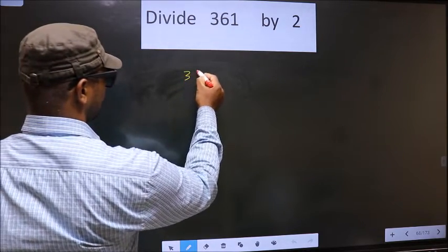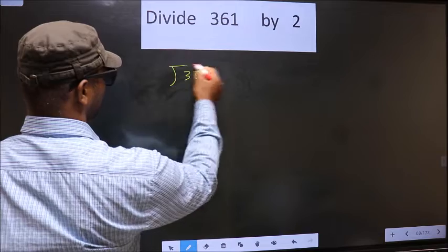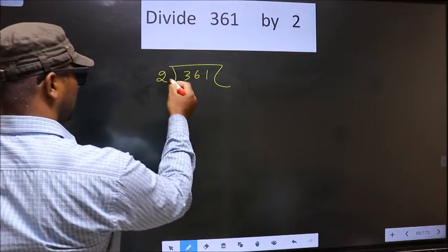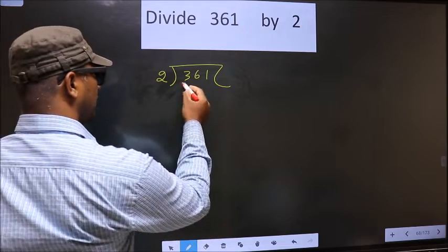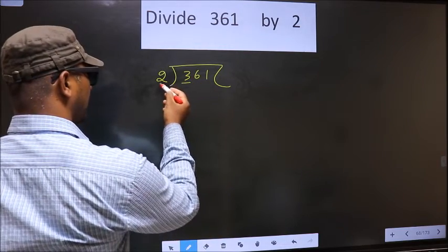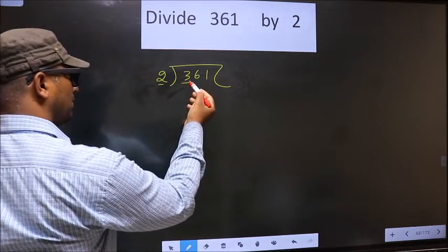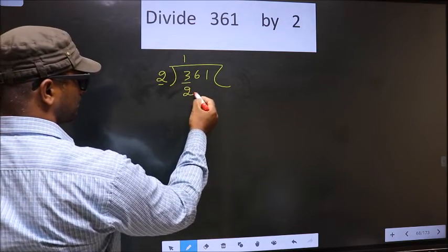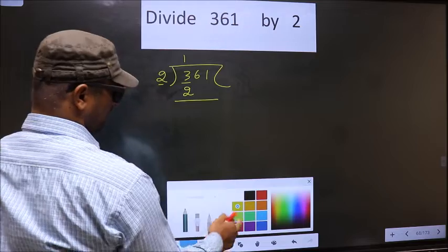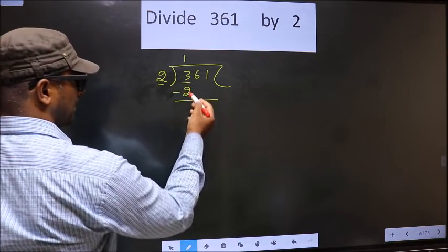That is 361, 2 here. Okay. Next, now here we have 3 and here 2. A number close to 3 in the 2 table is 2. 1 times 2. Now you subtract. 3 minus 2, 1.